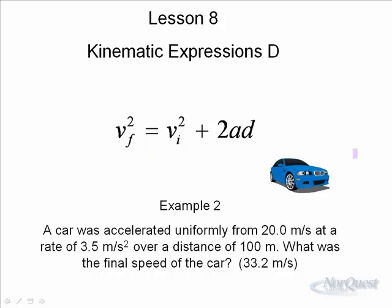Car was accelerated uniformly from 20 meters per second at a rate of 3.5 over a distance of 100. The difference between this and the first example is this time, the initial velocity is not zero. It's not at rest. But you do know that it's 20 meters per second. So 20 squared, that's 400. And then times 2 times the acceleration. Acceleration is 3.5 over a distance of 100. And you will get a fairly large number.